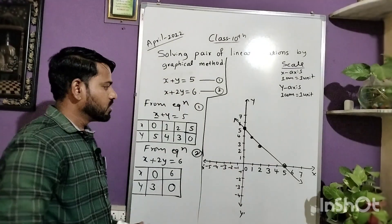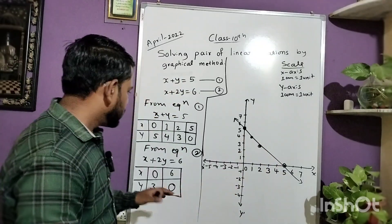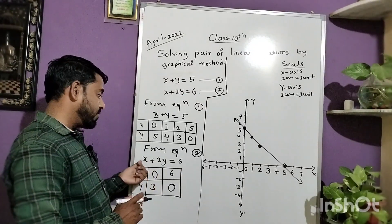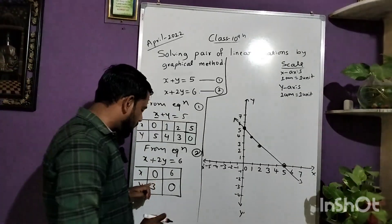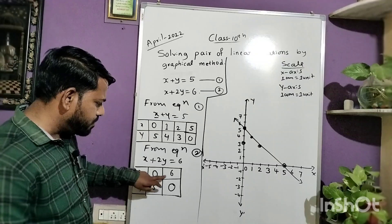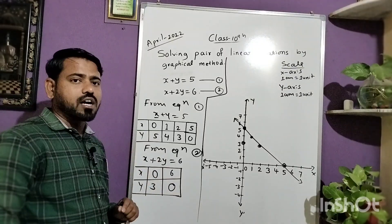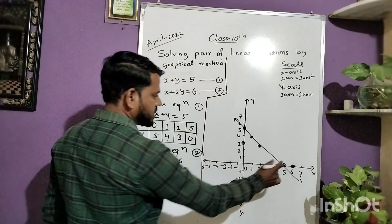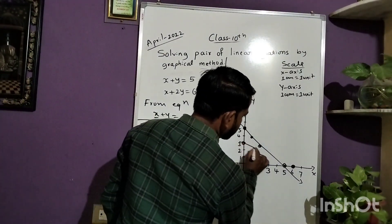Join the points using a scale only. If your calculation is wrong, a point will fall outside the line. This is the graph of equation 1. Similarly, mark the graph of equation 2. The first point is (0, 3): x is 0, so the point lies on the y-axis — mark y equals 3. The second point is (6, 0): y is 0, so the point lies on the x-axis — mark x equals 6. Join these two points to get the line for equation 2.